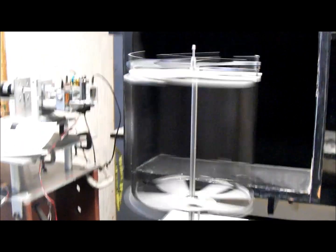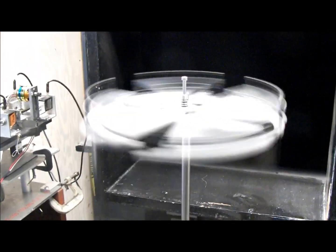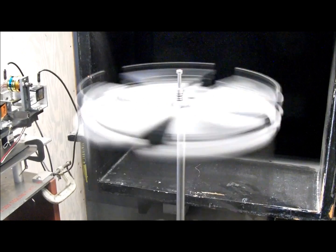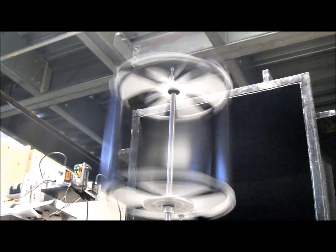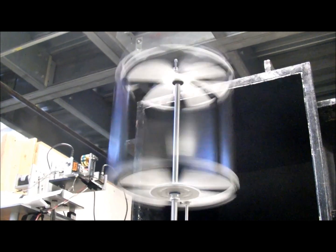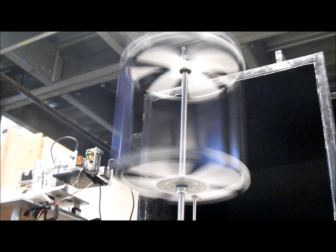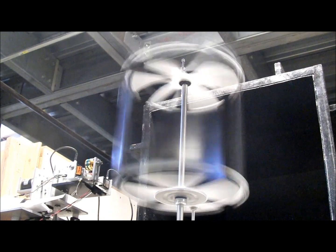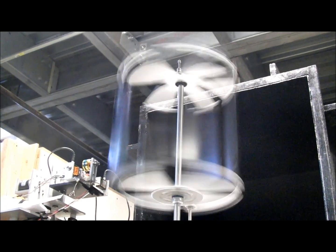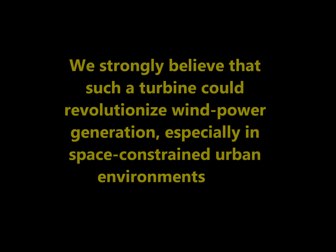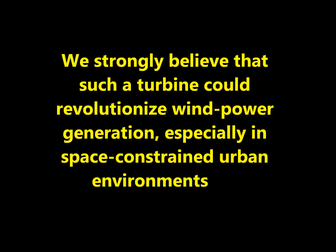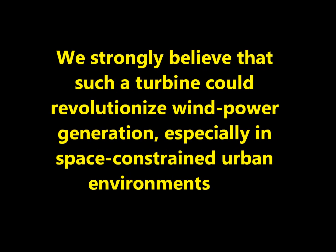A comprehensive experimental study is being carried out using a scaled-down turbine model to optimize power extraction, with CFD studies simultaneously carried out. Once the CFD model is validated using experimental results, it will be used to design the optimized full-scale turbine. The full-scale prototype could be finally tested at the Glenn L. Martin wind tunnel at the University of Maryland. We strongly believe that such a turbine could revolutionize wind power generation, especially in space-constrained urban environments.